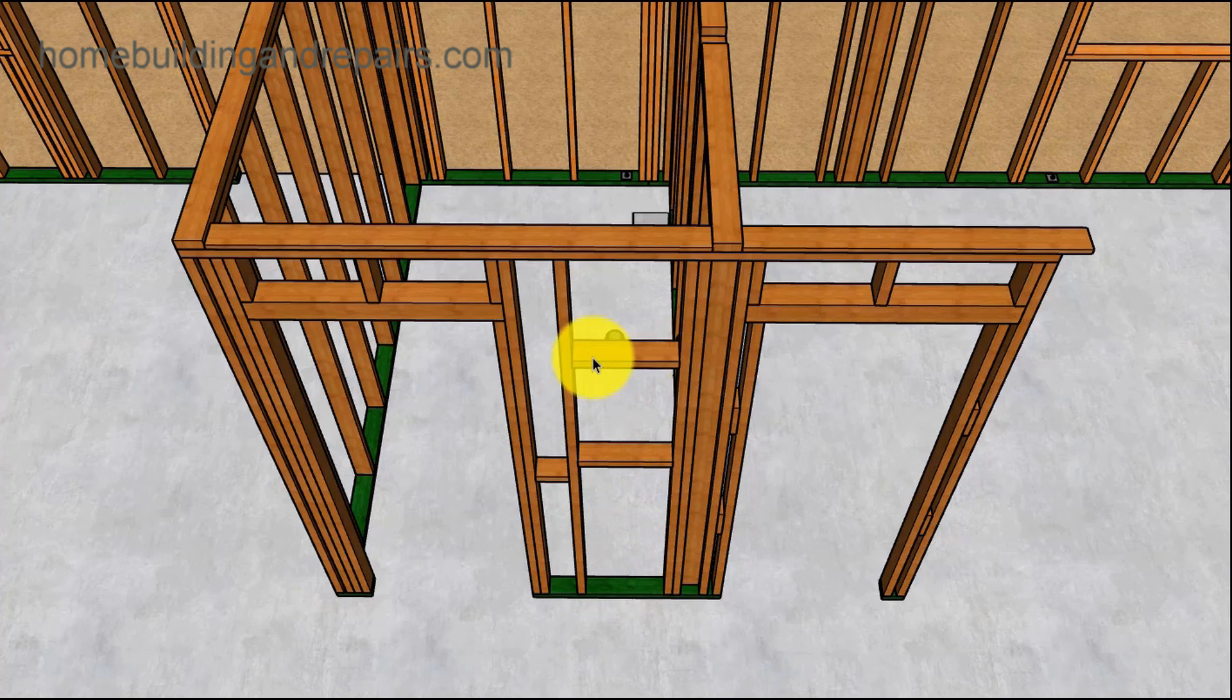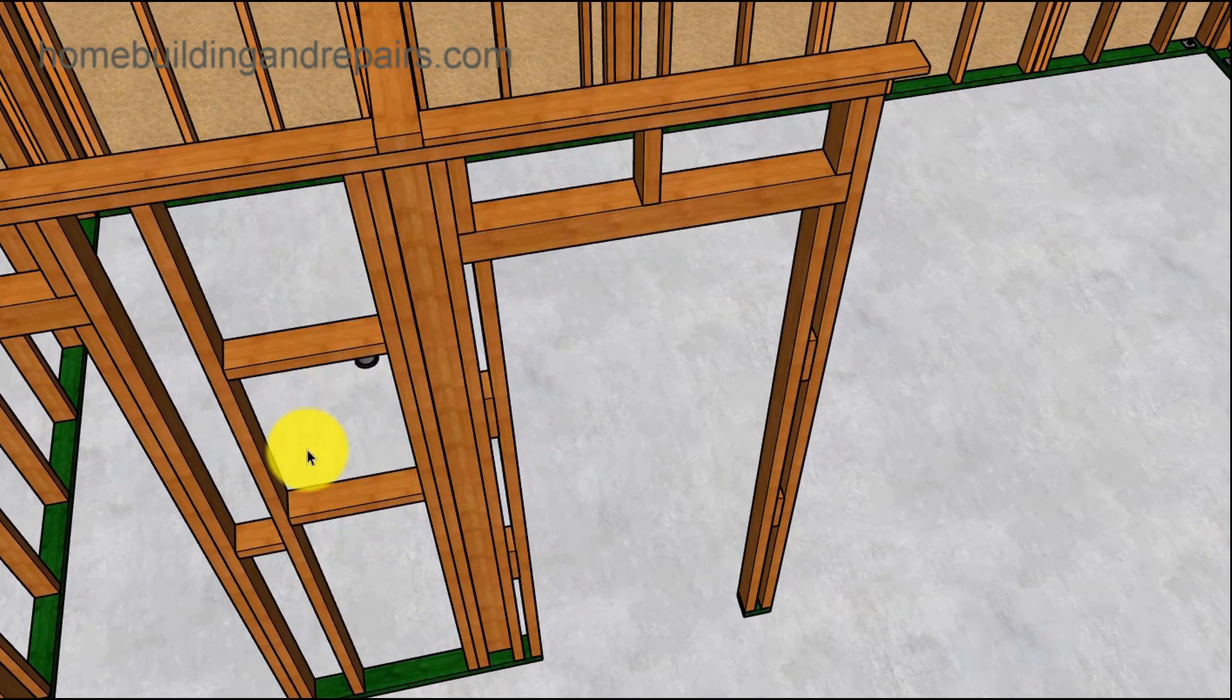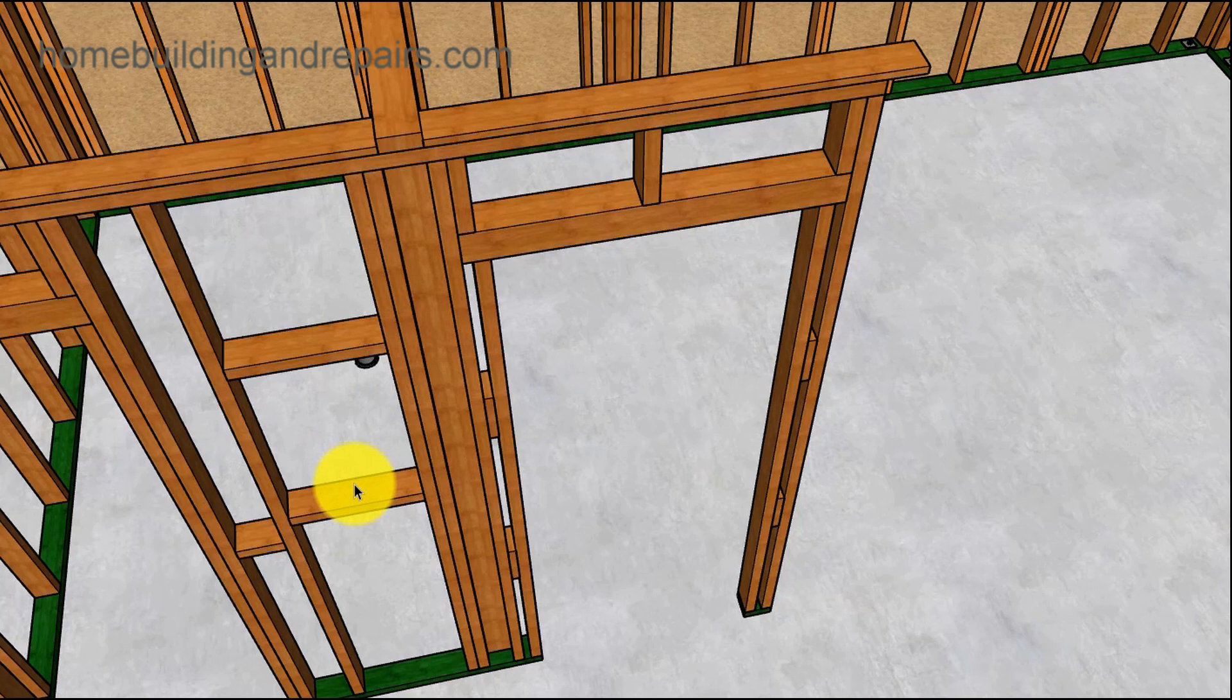And here we have a couple of blocks for a medicine cabinet. If you're going to build a medicine cabinet, you might want to put some blocks in there because on this side of the wall, you're going to have drywall. The drywall is going to go all the way through, but on the other side of the wall, it's going to need to have an opening so that you can insert the medicine cabinet into the opening.